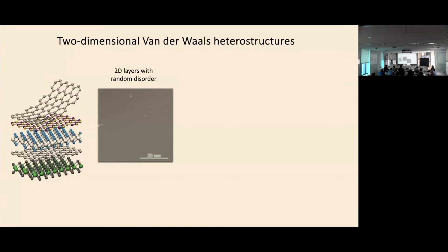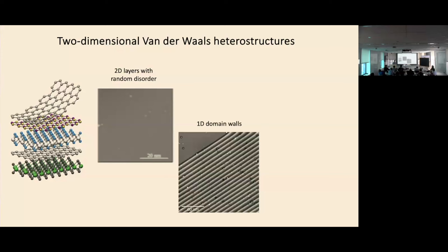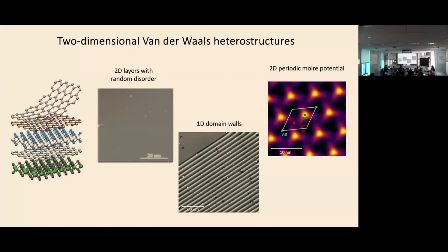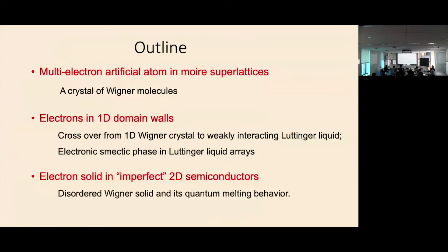Furthermore, by combining heterostructures, sometimes you can create a one-dimensional periodical potential — for example, these 1D domain walls and arrays of them. Also, by having twisted samples, you can form a two-dimensional periodical potential. One can ask how the electron solid behavior changes with 1D or 2D periodical potential. Today I will tell you our efforts trying to explore in those directions.